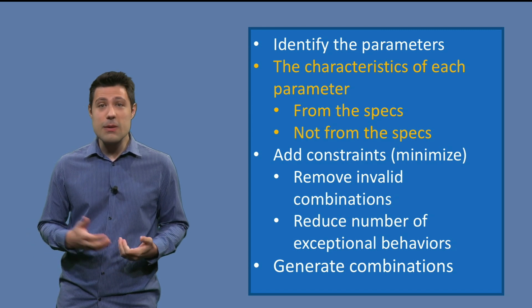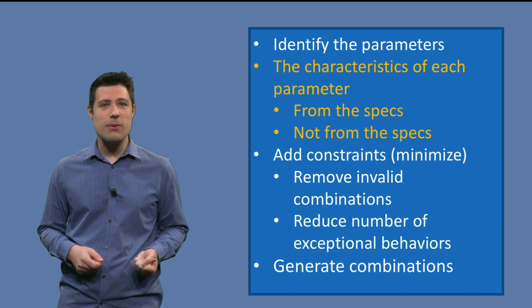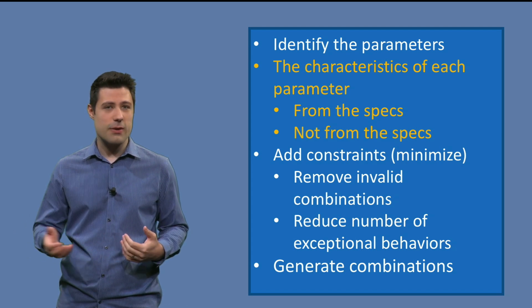Some of these characteristics we can get from the specification. For example, a number is always positive. But some others, we can't clearly get them from the specification. For example, input cannot be null. That is why looking beyond the requirements is important.